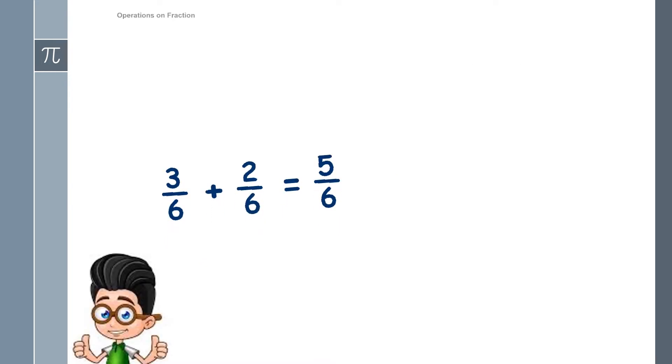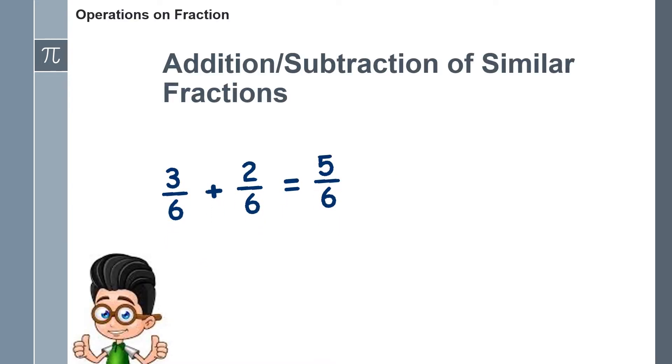For example, 3 over 6 plus 2 over 6. Since they have the same denominator which is 6, you can add directly the numerators and copy the common denominator. If the answer is still reducible or can be expressed in lowest terms, then express it in simplest terms.